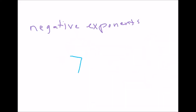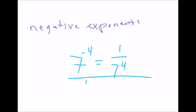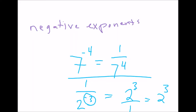Another example: 7 to the negative 4 really means 1 over 7 to the 4th power. A final example is when you have a negative exponent in the denominator, like 1 over 2 to the negative 3rd power. That negative exponent is on the wrong side of the fraction, so you move it to the top: 2 to the 3rd power over 1, or just 2 to the 3rd power. So if you see a negative exponent — if it's on the top, move it to the bottom; if it's on the bottom, move it to the top.